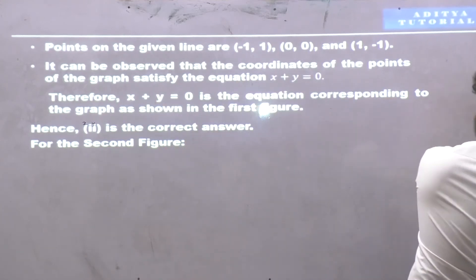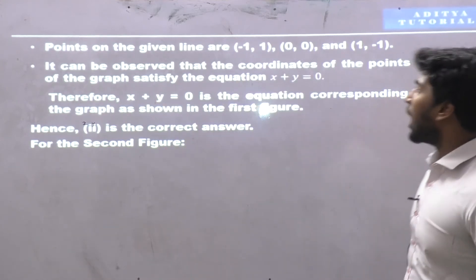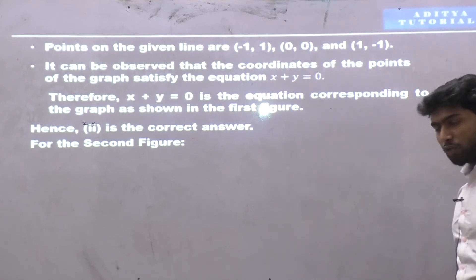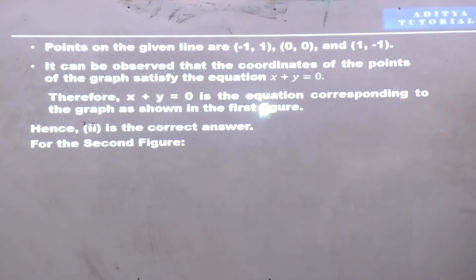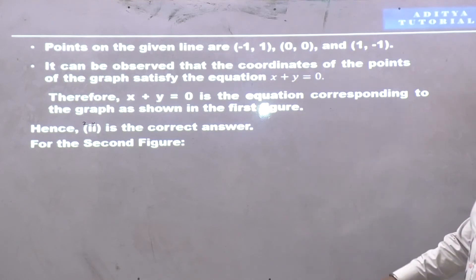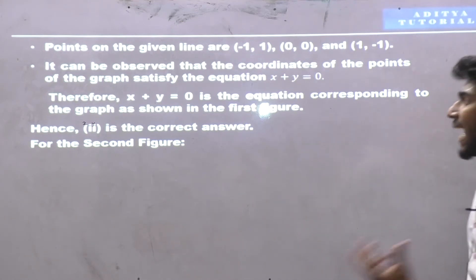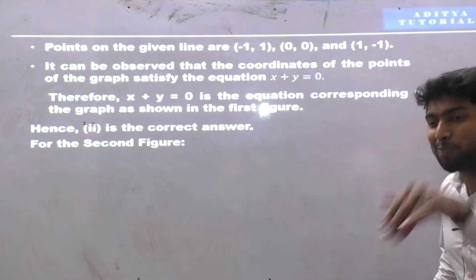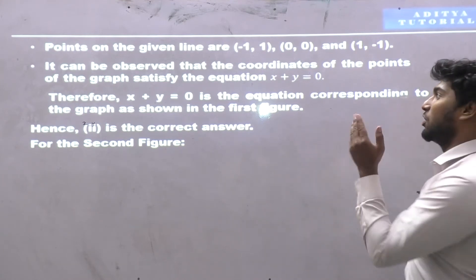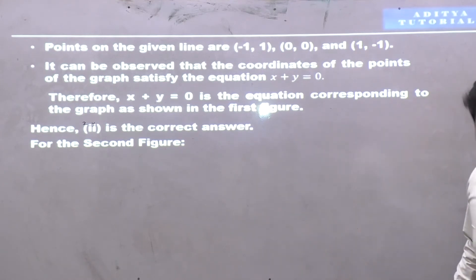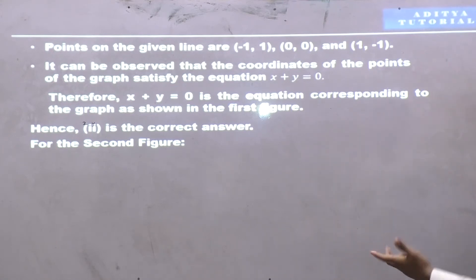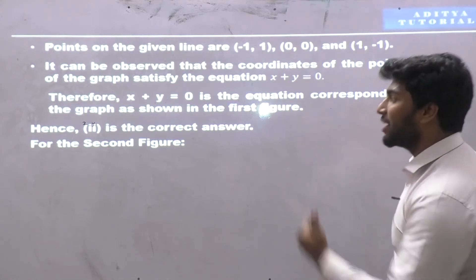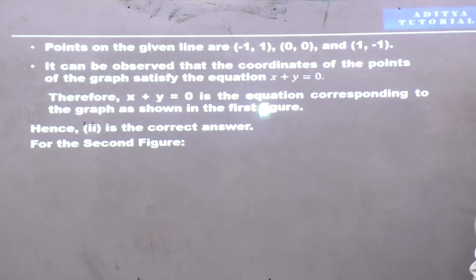For the points on the line: (-1,1), (0,0), and (1,-1), it can be observed that the coordinates satisfy the equation x plus y equals 0. Therefore, x plus y equals 0 is the equation corresponding to the graph shown in the first figure.